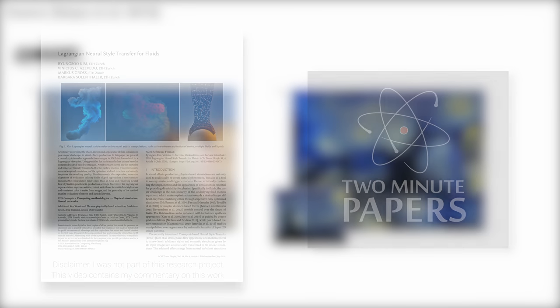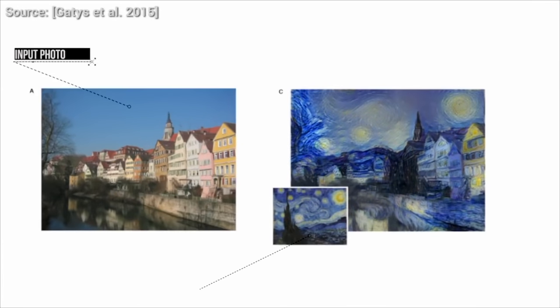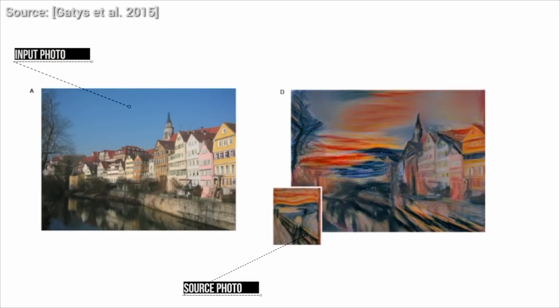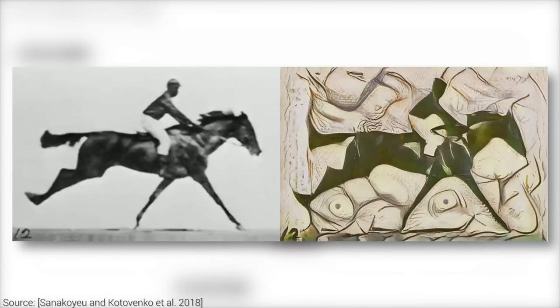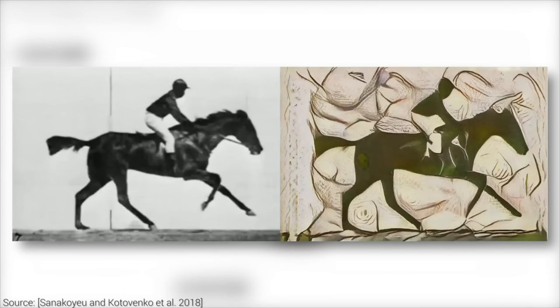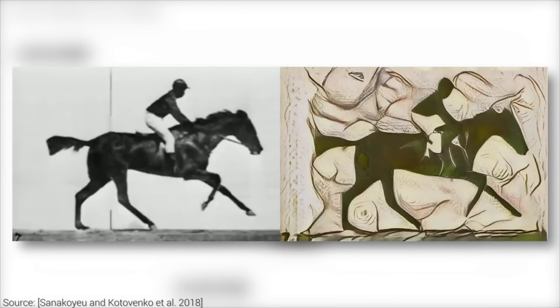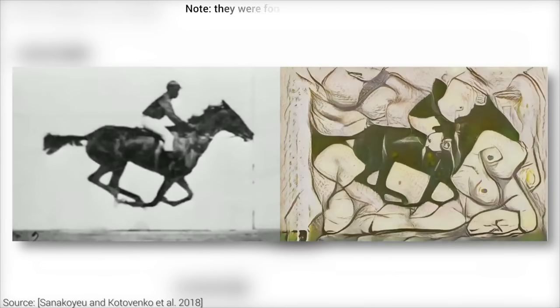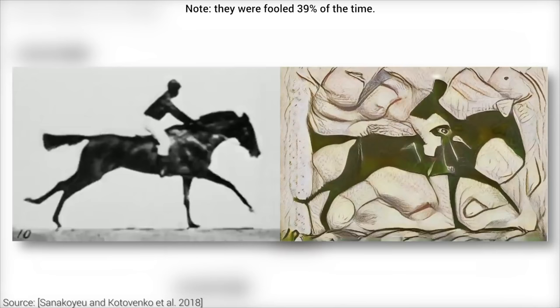Style transfer is a technique in machine learning research where we have two input images, one for content and one for style, and the output is our content image reimagined with this new style. The cool part is that the content can be a photo straight from our camera, and the style can be a painting, which leads to the super fun results that you see here. An earlier paper had shown that the more sophisticated ones can sometimes make even art curators think that they are real.